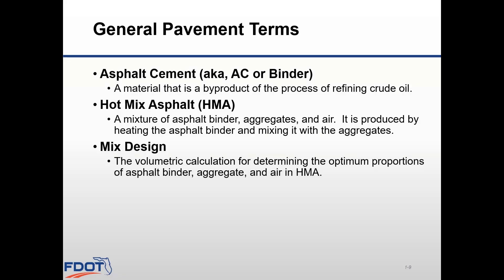Let's start with the basics and look at the materials that make up flexible pavements. The first ingredient is asphalt cement, referred to as AC or binder. The most common source of AC is a byproduct of the refining process of crude oil. Hot mix asphalt, also referred to as HMA, is the method most commonly used in Florida. It combines AC, aggregates, and air at high temperatures to produce asphalt. Mix design is a balancing act to find the optimum percent of each ingredient to provide strength and stability, rut resistance, but also durability and crack resistance.